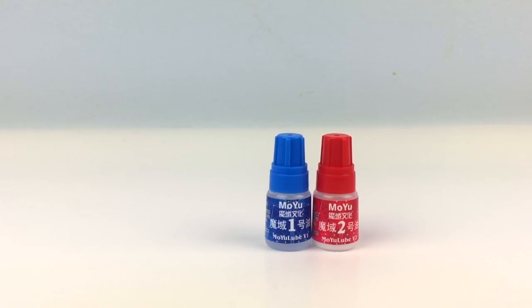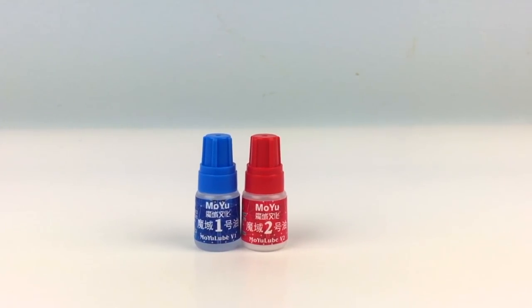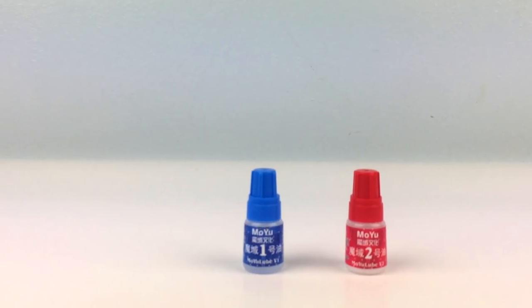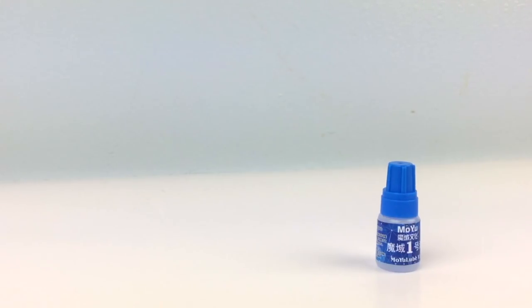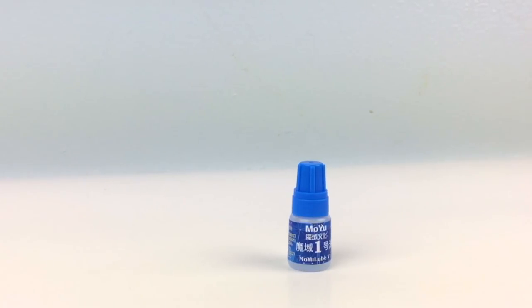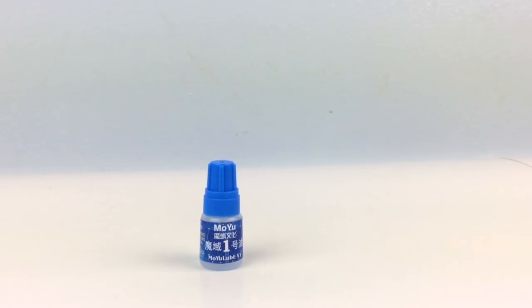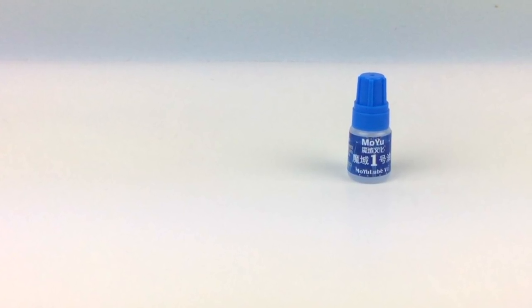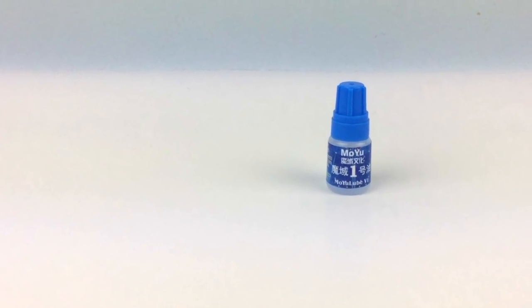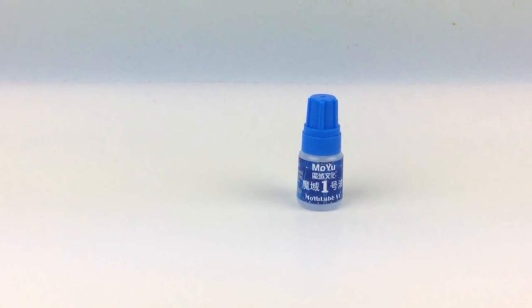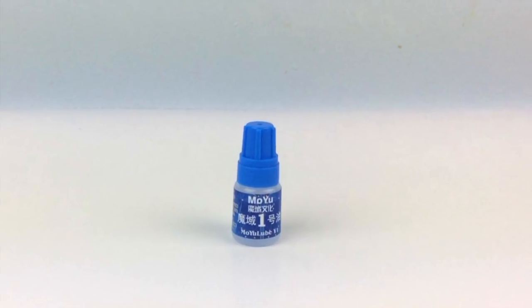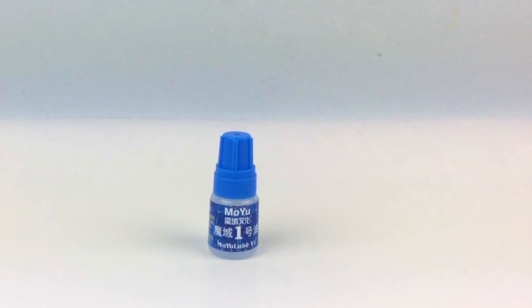Next up, the Moyu lubes. These aren't publicly available yet. But I think they will be in the near future. The lube has two types. Type 1 and Type 2. Type 1 is a traditional silicone lube. Except, in my opinion, it has one major flaw. It's really, really runny. I put some in a Yue Xiao to test it out. And within one solve, my fingers and the entire outside of the cube were covered in the lube. Along with that, I didn't notice a significant difference in the feel of the cube.